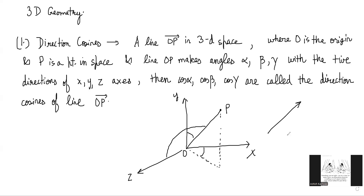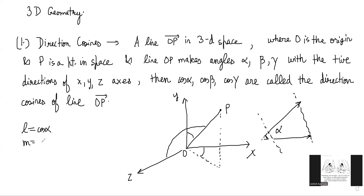Whenever you have a line and an axis, there will be a plane passing through both, and the angle between them in that plane is alpha, beta or gamma. So cos alpha, cos beta, cos gamma become your direction cosines, and we give them symbols: L = cos alpha, M = cos beta, N = cos gamma. These are your direction cosine values.